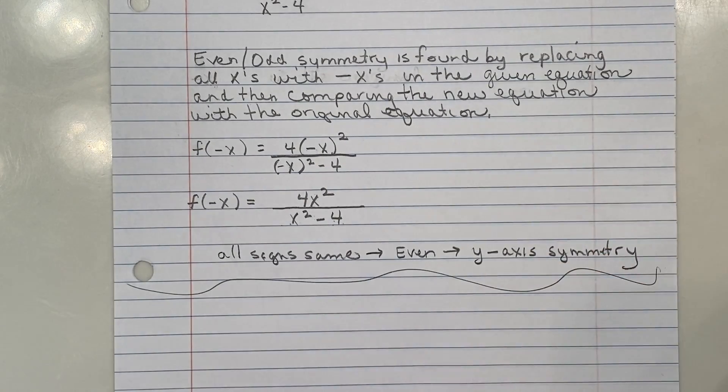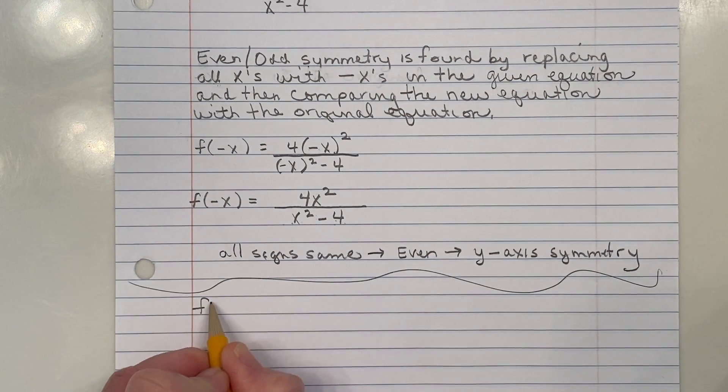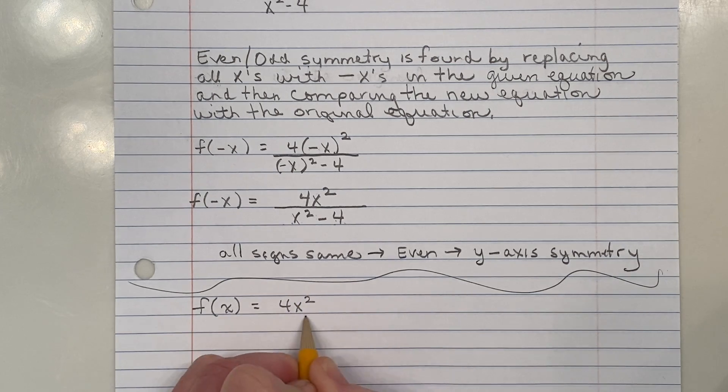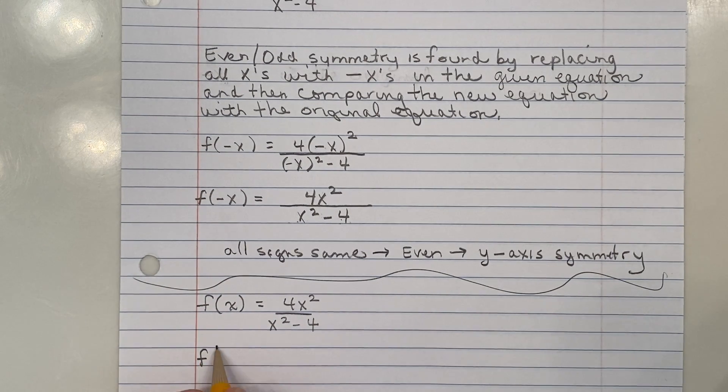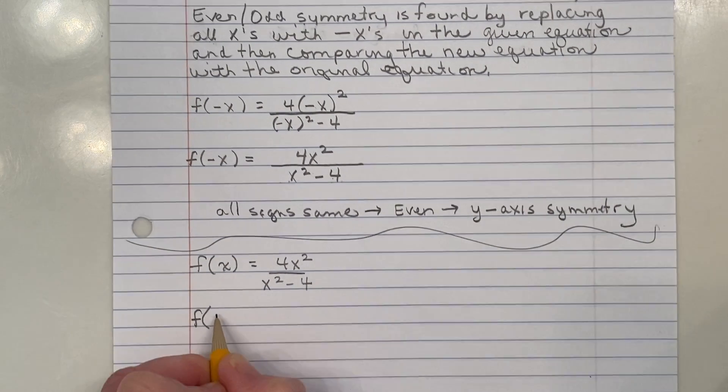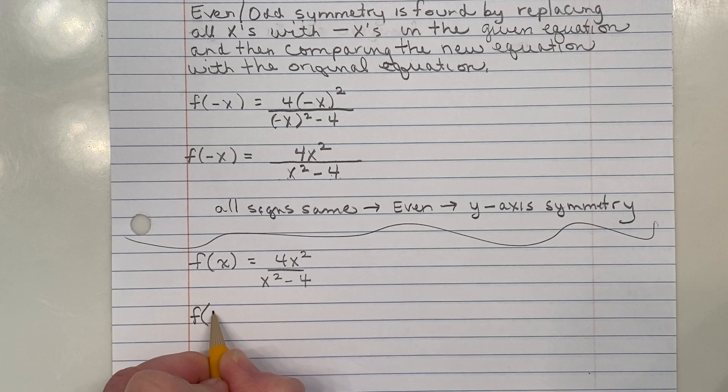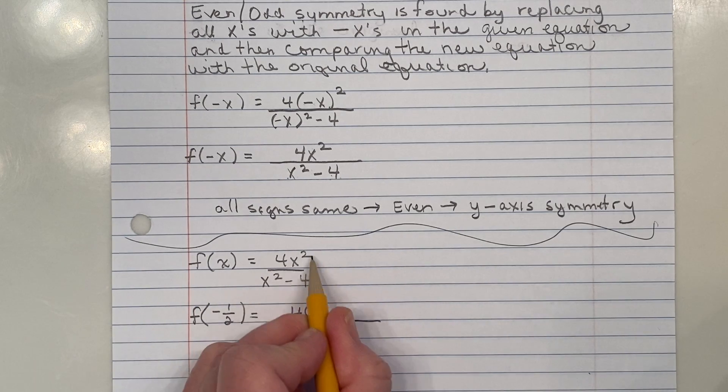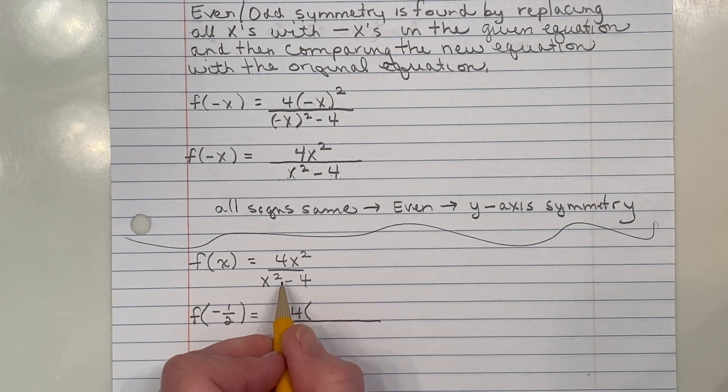Alright, I believe your second question was about how did they get a four-fifths or negative four-fifths from evaluating the function. Alright, I think you're talking about the one where the input was negative one-half and maybe positive one-half. So let me go ahead and just plug in negative one-half.